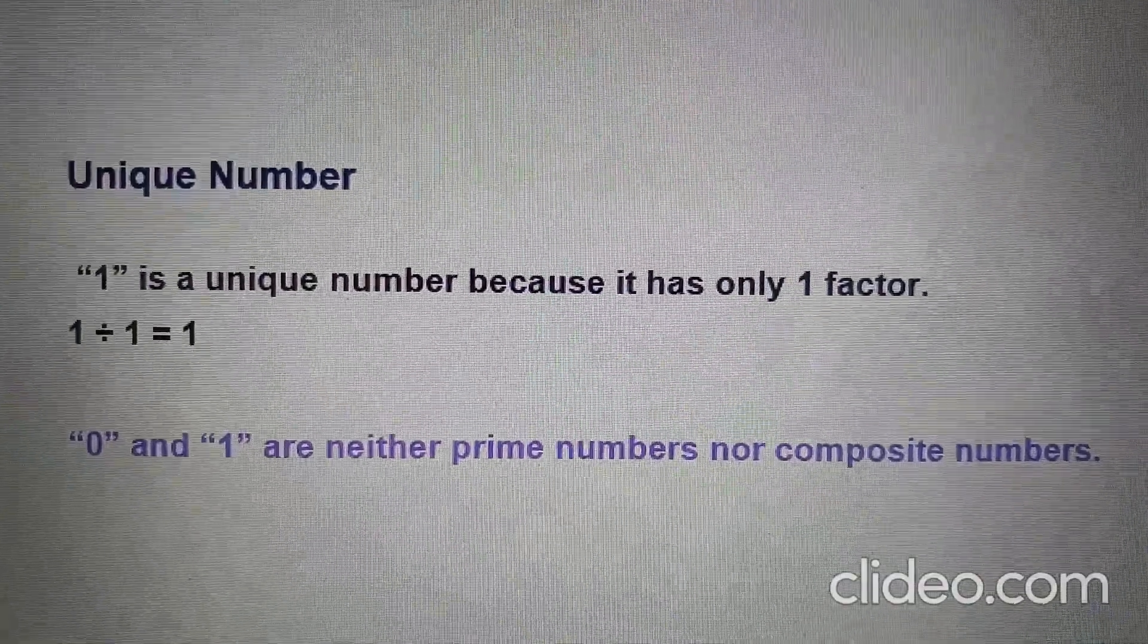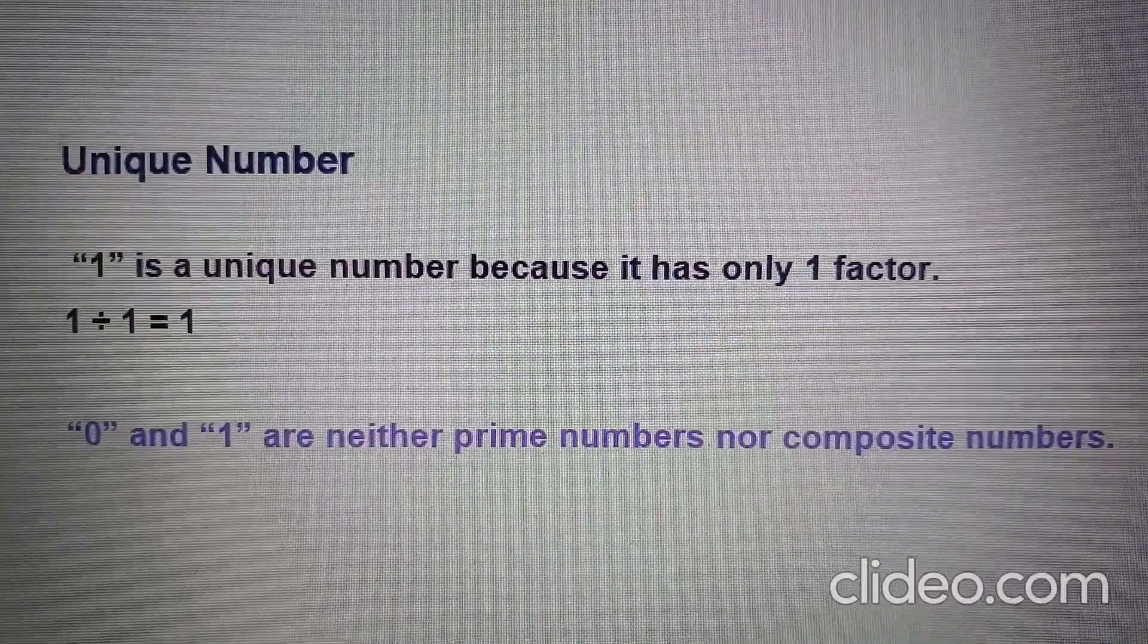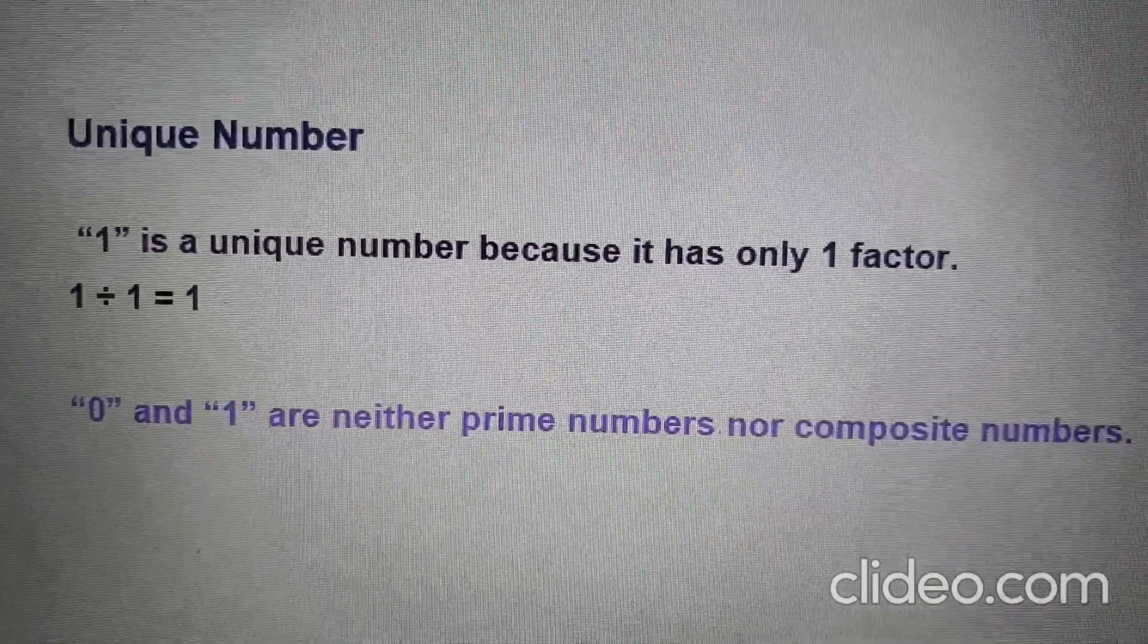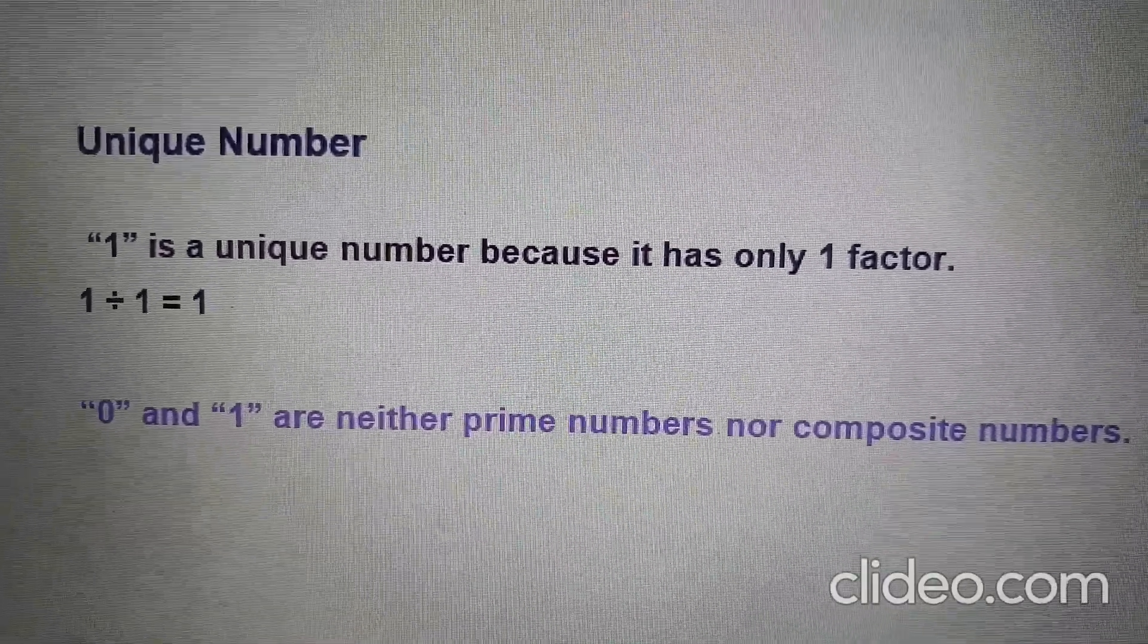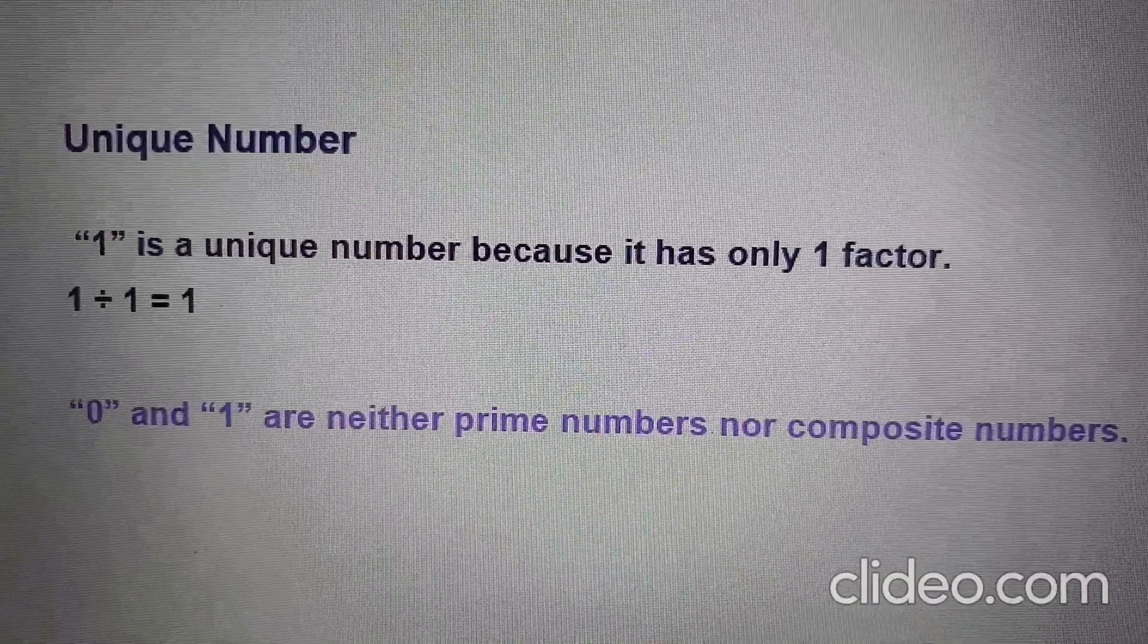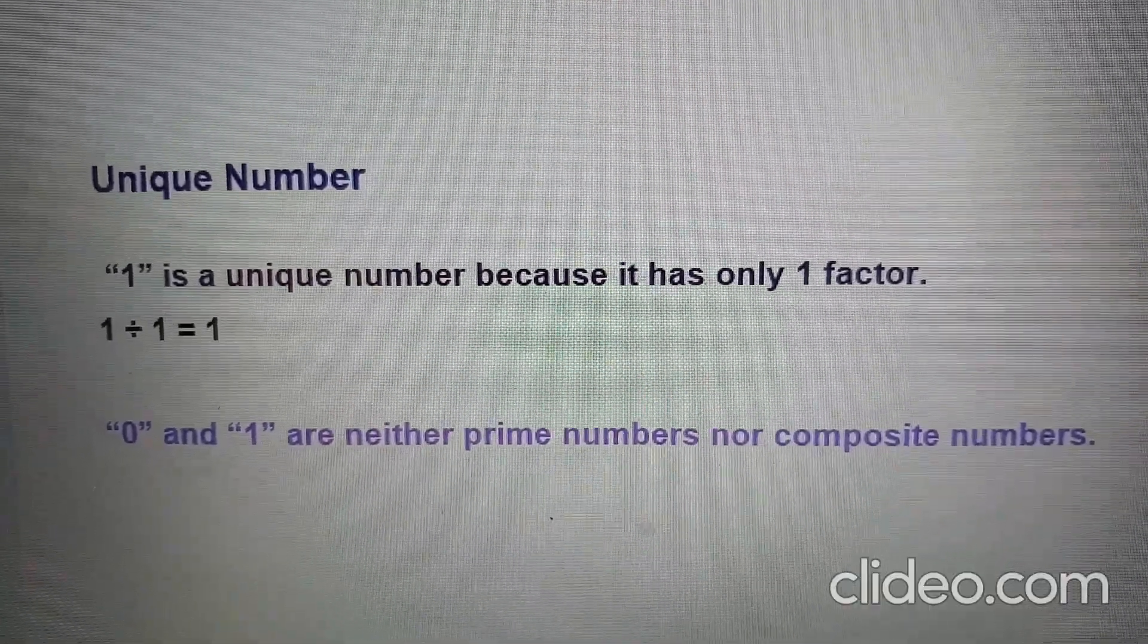Number 1 is a unique number because it has only one factor. That means 1 can be divided by 1 only. Unique means special. Our planet Earth is also a unique planet because it is the only planet that has life. Therefore 0 and 1 are neither prime numbers nor composite numbers.